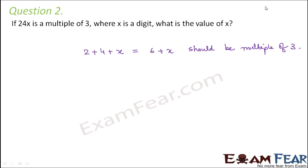Now for this to be a multiple of 3, what are the various multiples of 3? 3 ones are 3, 3 twos are 6, 3 threes are 9, 3 fours are 12, 3 fives are 15 and so on. Now x can take a value between 0 to 9 because x is a digit.